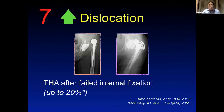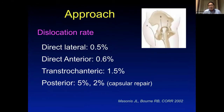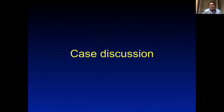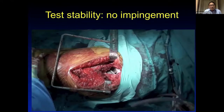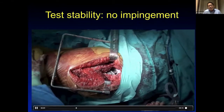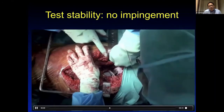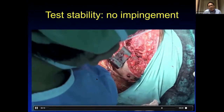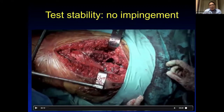The final point is dislocation. Like revision hip arthroplasty, these patients have a higher risk of hip dislocation. Consider different approaches to reduce risk — the anterior approach has lower dislocation rates compared to the posterior approach. Critically, avoid neck-cup impingement. Use trials and test stability intraoperatively: test extension stability first to check for impingement, then flex the hip with internal rotation to test posterior stability, ensuring no impingement on either side of the acetabular cup and femoral neck.